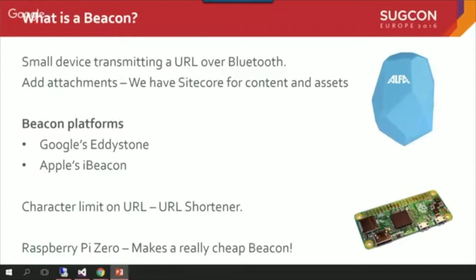A little bit about the cost of Bluetooth beacons: these can be picked up for about 30 dollars or 30 euros — quite cheap. But you can actually build them even cheaper yourself. This device at the bottom of the screen is a Raspberry Pi Zero; you can get them for 4 or 5 euros and build a Bluetooth beacon yourself. The advantage is you have a lot more flexibility — you could add sensors such as temperature or humidity, use that data in your beacon, connect it to a web service and Sitecore, and even change the URL for personalization.